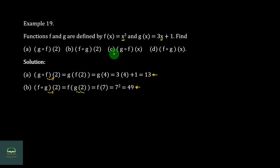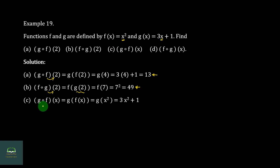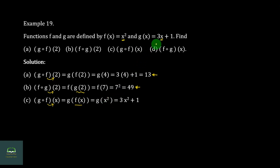G∘F of 2 equals F(7). F(7) is 7 squared, which is 49. G∘F squared, G∘F of x squared — this gives the result.